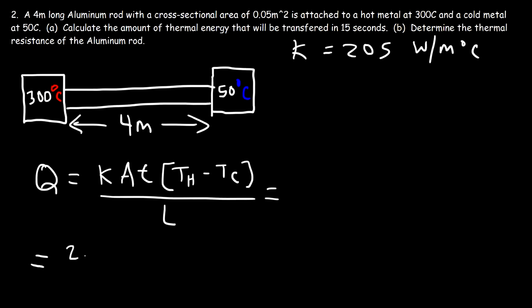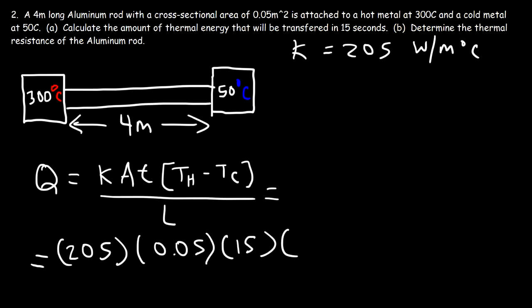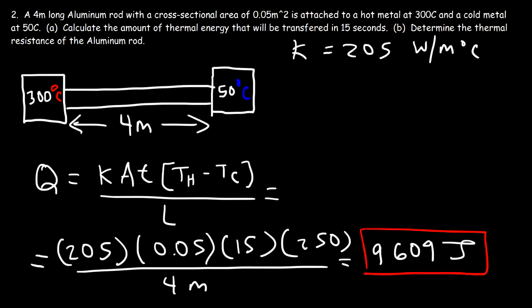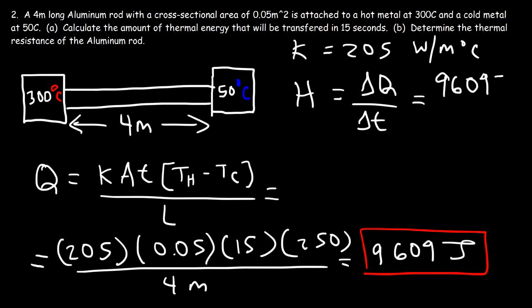K is 205, the cross-sectional area is 0.05, time is 15 seconds, the temperature difference is 300 minus 50 = 250 Celsius, and the length is 4 meters. So 205 times 0.05 times 15 times 250 divided by 4 equals 9,609 joules — the thermal energy transferred in 15 seconds. The heat current is delta Q over delta t: 9,609 divided by 15 gives about 641 watts, which is the thermal power.